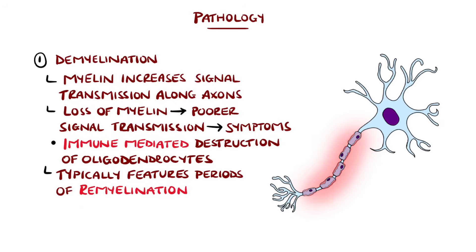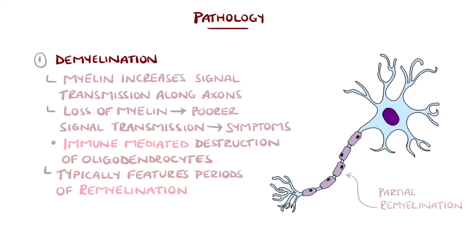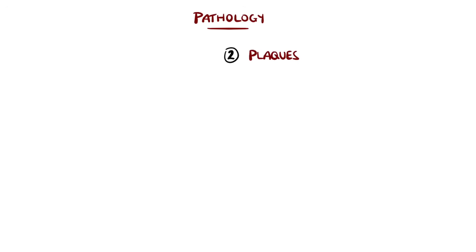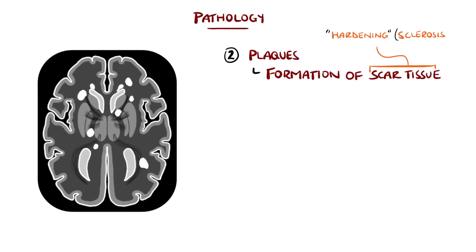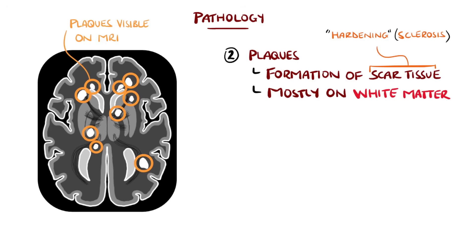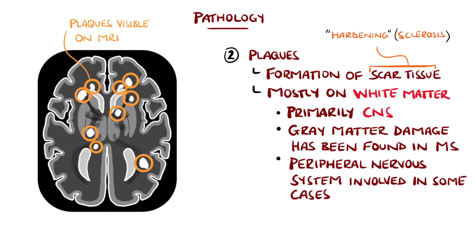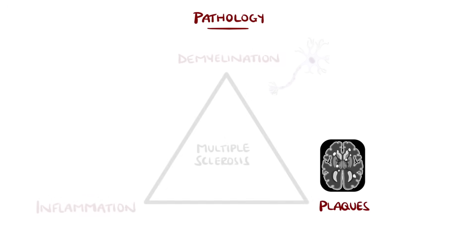The demyelination is not constant; it is interrupted by periods of remyelination where some of the myelin sheath is restored but not completely rebuilt. As this process is repeated, scar tissue forms along the axons known as plaques, giving the disease the name sclerosis due to the hardening of affected tissue. These further impair signaling and contribute to neuronal dysfunction. Plaques are most commonly found in the white matter, particularly around small veins, but can affect anywhere in the CNS, including the gray matter and, rarely, the peripheral nervous system.